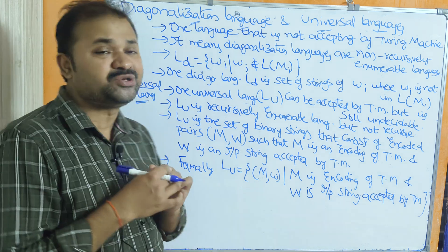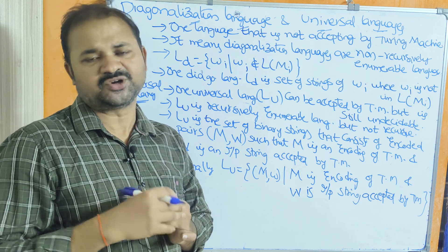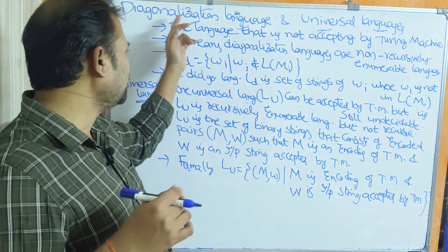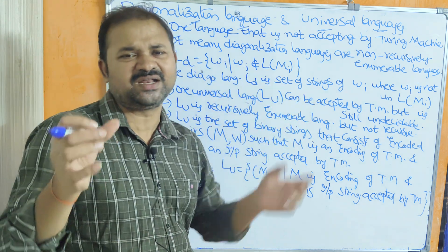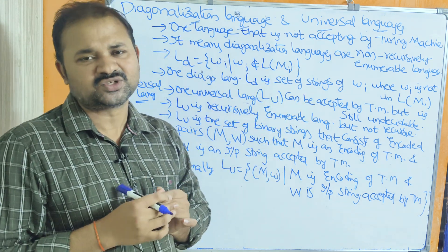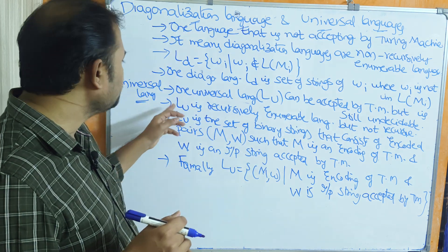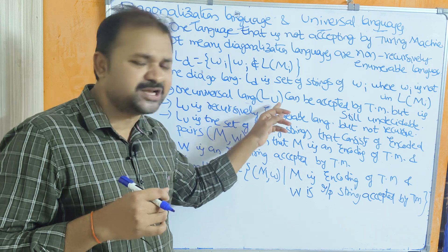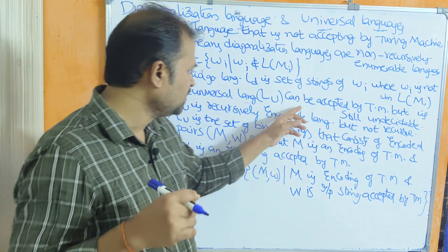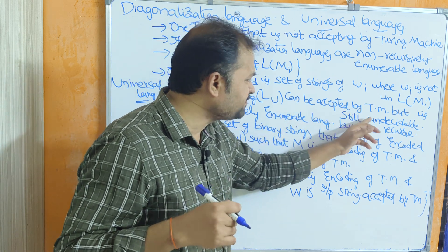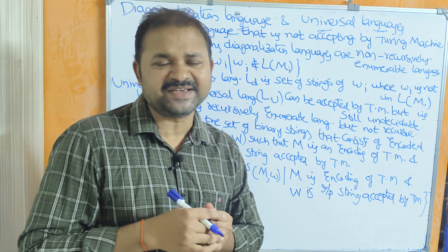Now let us see the second topic, which is universal language. These two topics are different. The universal language is represented by L_U. The universal language can be accepted by the Turing machine but is still undecidable.